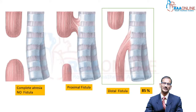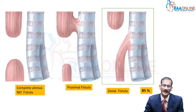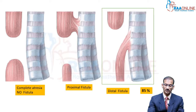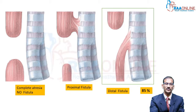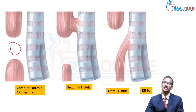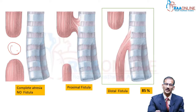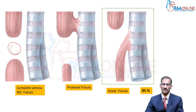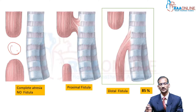In this picture, you can see the trachea, the proximal end of the esophagus towards the mouth, and the distal end. There is a big gap here — this is a complete atresia, meaning there is no communication between the upper and lower end of the esophagus, nor is there a fistula between the trachea and the esophagus. This is one presentation.